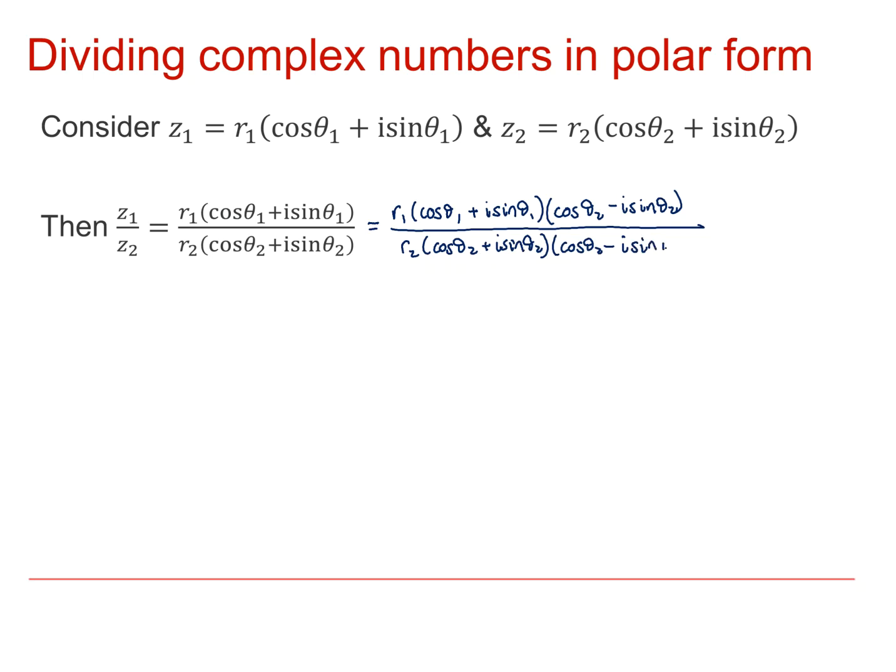Now we multiply it. That's cos theta1 cos theta2 minus i cos theta1 sin theta2 plus i sin theta1 cos theta2 minus i squared sin theta1 sin theta2. And the denominator is R2 cos squared theta2 minus i squared sin squared theta2. Difference of two squares there in the denominator as usual.